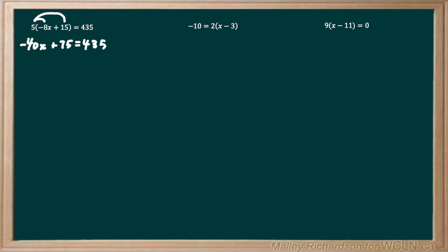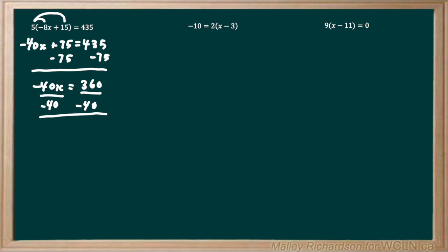Now we're left with no brackets, and we just have to isolate for x. So to isolate for x, we're going to subtract 75 from both sides, draw our line, and we're left with negative 40x equals 360. Now we just have a multiplication between the negative 40 and the x, so we're going to divide both sides by negative 40. That leaves us with x equaling 360 divided by negative 40, which is negative 9. Both methods give x equals negative 9, so either method you pick, you'll get the same answer. Just pick whatever method you feel most comfortable with.